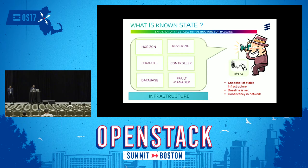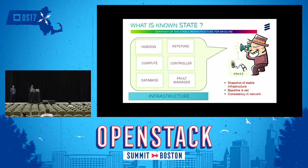In the next couple of slides, we will see how we can create a baseline from an infrastructure and how our environment looks with a known state deployed. I have taken a reference infra here. For example, if this infra consists of Horizon, Keystone, Compute, Controller, Database, and Fault Manager — in a production environment there may be different other kinds of nodes deployed.